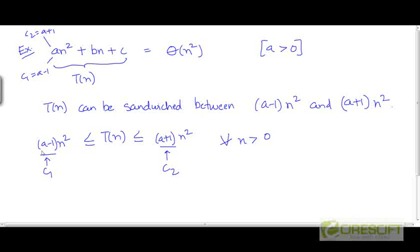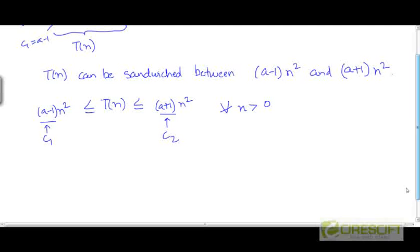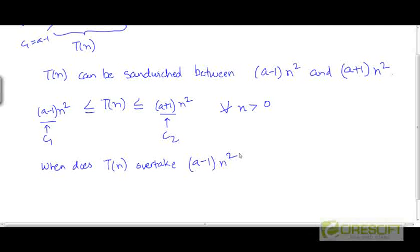Then we find that t can be sandwiched between c1 times n squared and c2 times n squared. t is greater than or equal to a minus 1 times n squared, and t is less than or equal to a plus 1 times n squared, beyond a certain point. Now what is that point? When does t of n stay higher than a minus 1 times n squared?